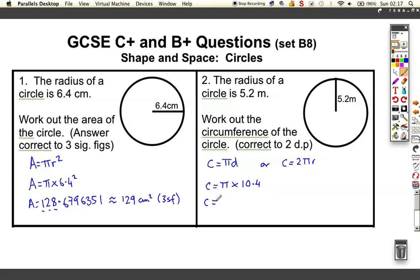So the circumference of this one is pi times 10.4 and you get the full answer 32.6725636, approximately equal to, we're going to two decimal places this time, 32.67 metres. This one's just metres because it's the length running outside of the circle.